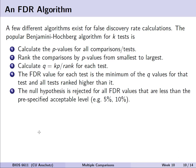The false discovery rate value for each test will be the minimum of the q-values for that test and all higher ranked tests. The null hypothesis will then be rejected for all FDR values that are less than some pre-specified acceptable level. It makes the most sense to walk through an example of doing this by hand, as well as seeing how R and SAS can do this for us.